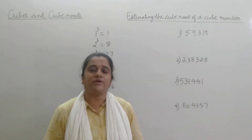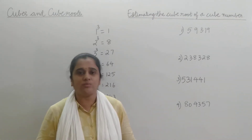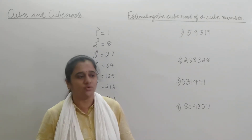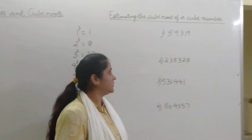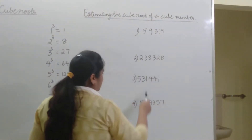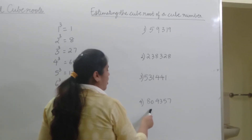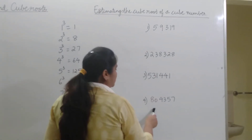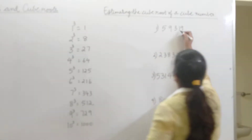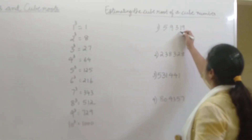Let's learn how to find the cube root of a cube number or a perfect cube. The numbers we see here are perfect cubes or cube numbers. Let's take out the first one and understand how to find its cube root.